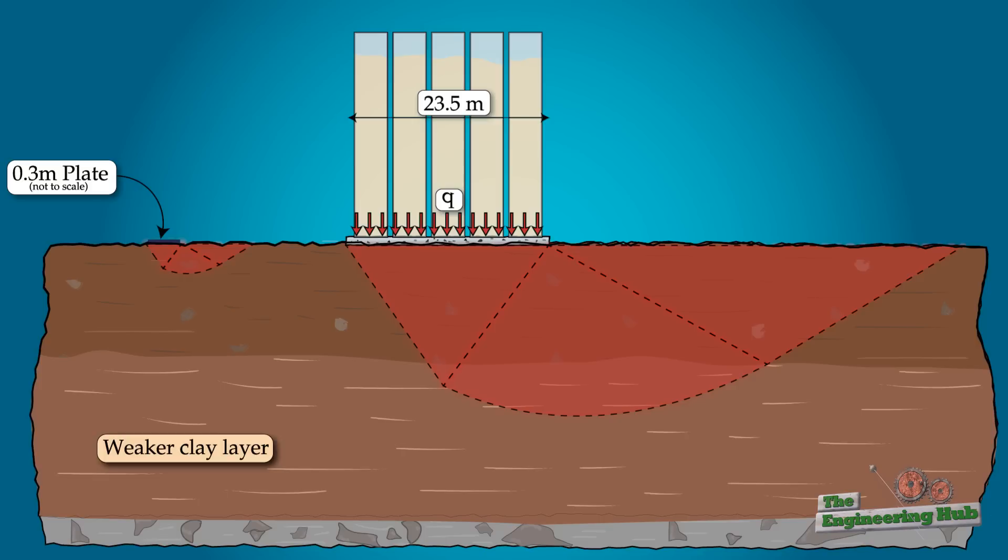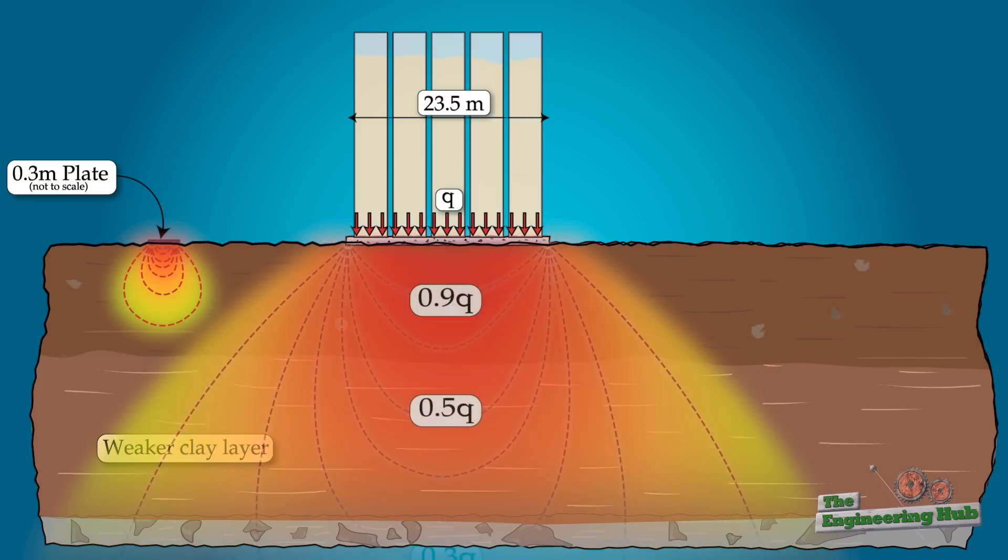The wash borings from 1913 provided only a visual assessment, which misled the designers into thinking that the underlain soil is homogeneous.